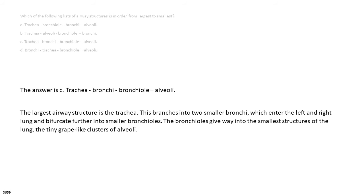The answer is C. Trachea, bronchi, bronchiole, alveoli. The largest airway structure is the trachea. This branches into two smaller bronchi, which enter the left and right lung and bifurcate further into smaller bronchioles. The bronchioles give way into the smallest structures of the lung, the tiny grape-like clusters of alveoli.